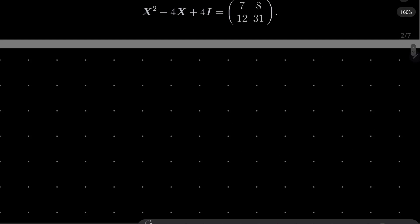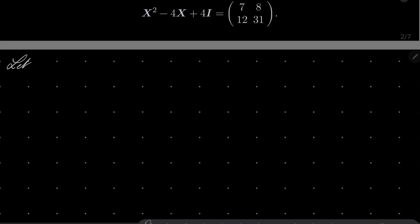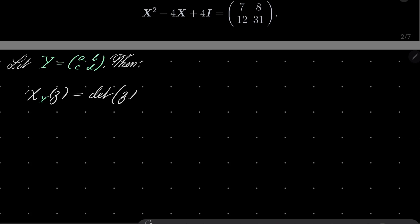Let's start by deriving the general form of the characteristic polynomial for a 2 by 2 matrix. Define Y to be [[a, b], [c, d]]. Then the characteristic polynomial of Y is, by definition, the determinant of (Z times I minus Y), which is the determinant of the matrix [[Z minus a, minus b], [minus c, Z minus d]].